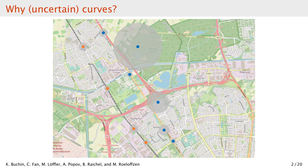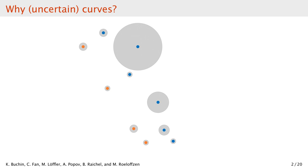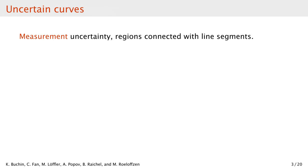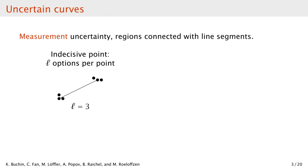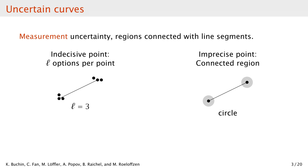If we abstract away from the precise curves and then from the map, leaving only the sequences of disks, we get uncertain curves. They consist of uncertain points. Each uncertain point in our case is some region, and the true location of the object at measurement time lies somewhere in that region. We are thus interested in similarity of two such uncertain curves. We focus here on measurement uncertainty, and we connect measurements with line segments. We distinguish two uncertainty models: indecisive points, where the region is a discrete set of points, and imprecise points, where the region is some convex region, such as a disk or line segment. A sequence of such regions is an indecisive or an imprecise curve. If we pick a point from each uncertainty region, we get what we call a realization of an uncertain curve.